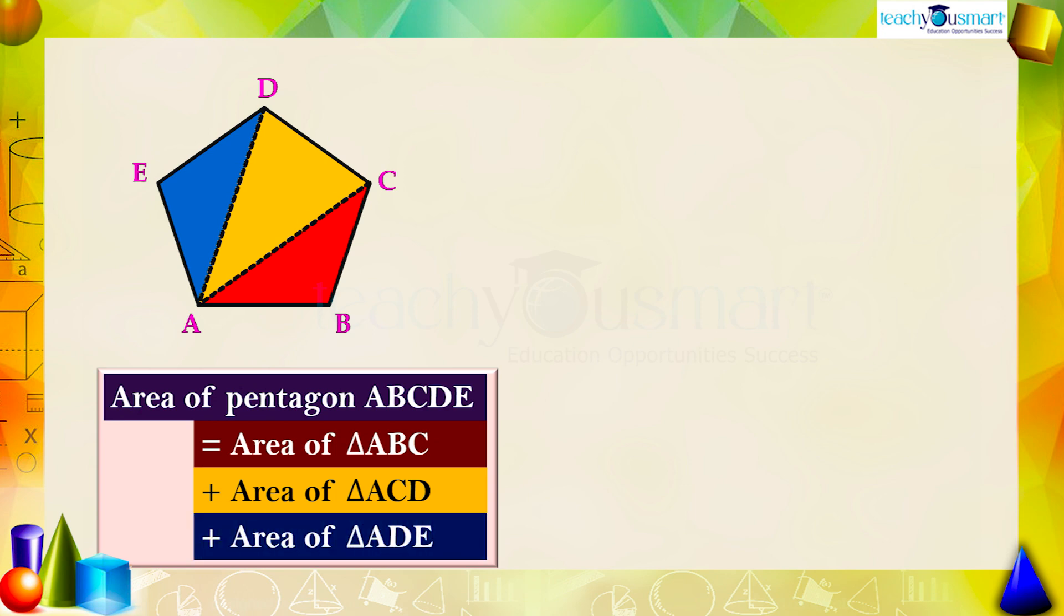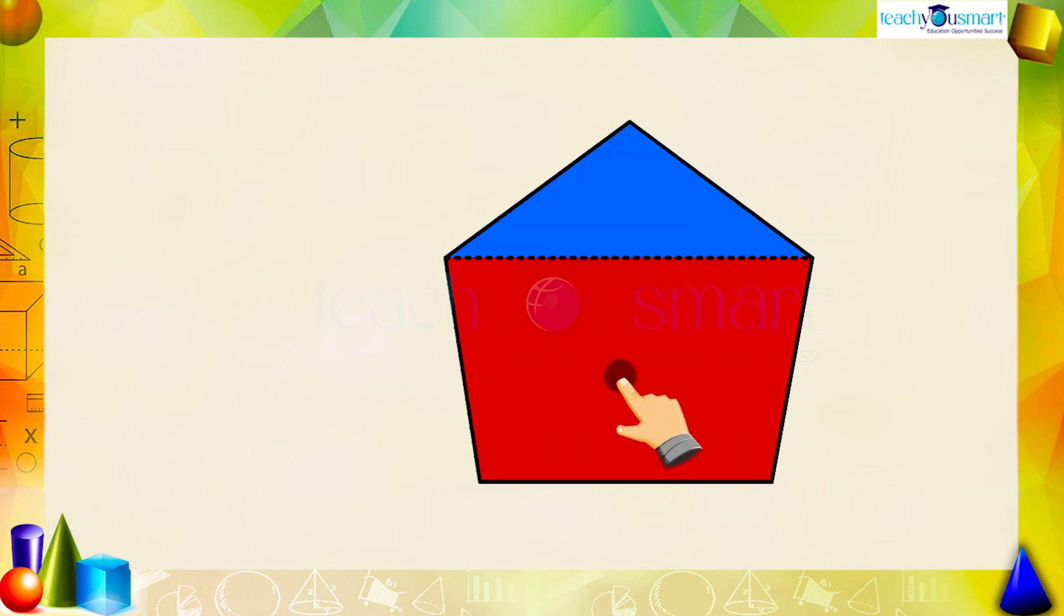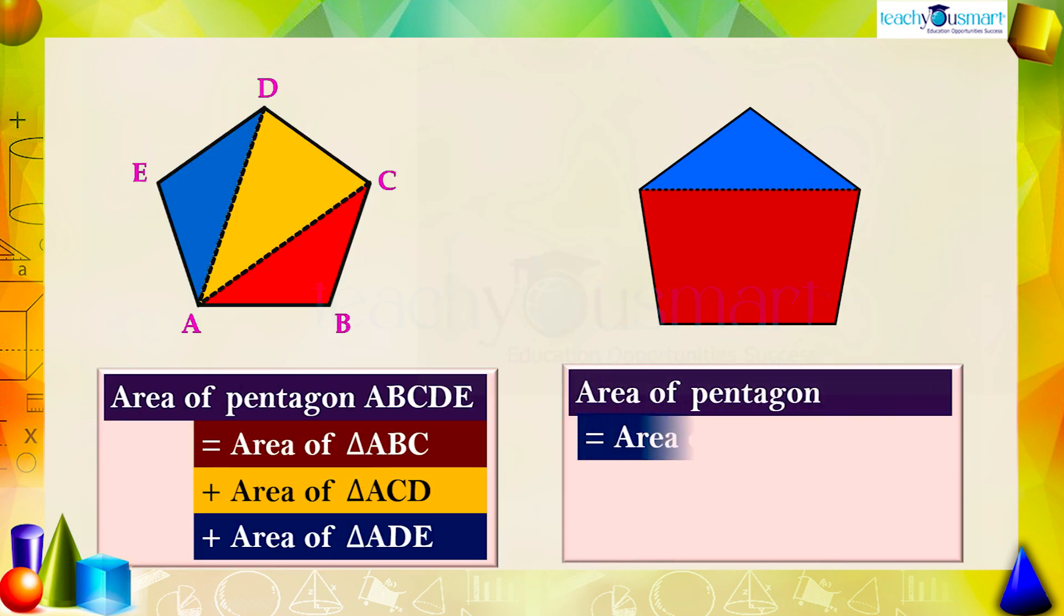Or we can find the area of a pentagon in another way: split the pentagon into a quadrilateral which has a known area and a triangle, then add the area of these two.